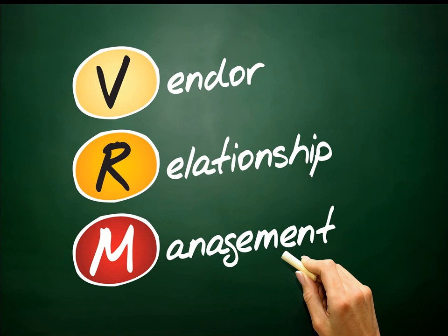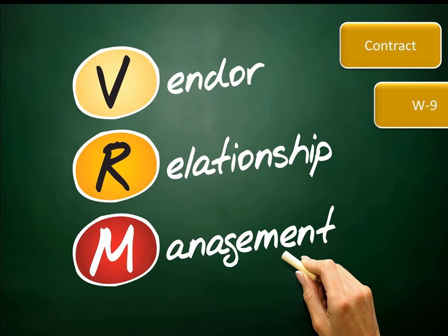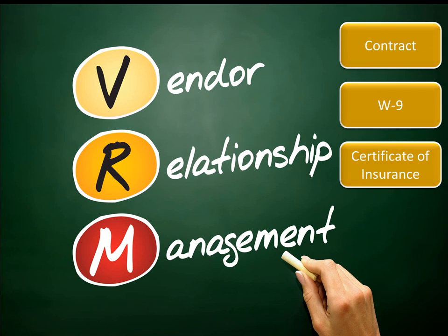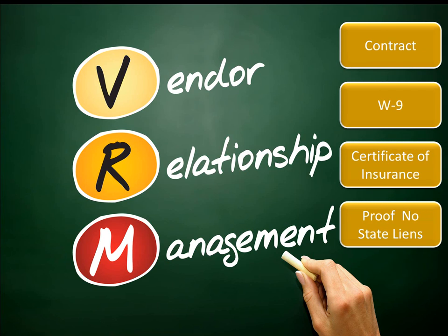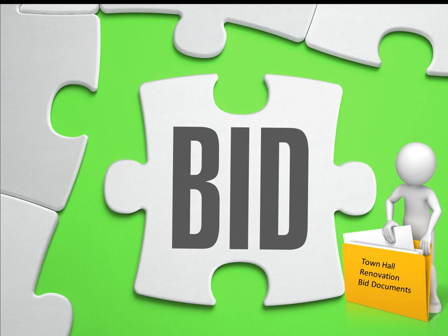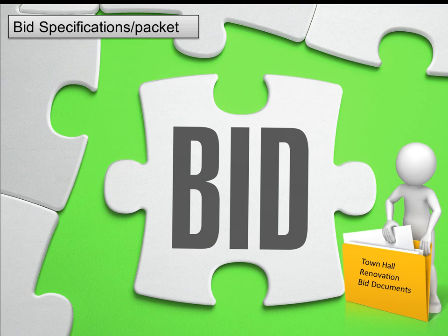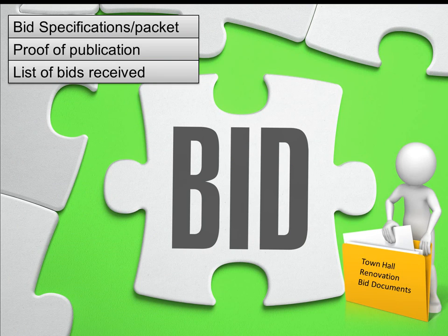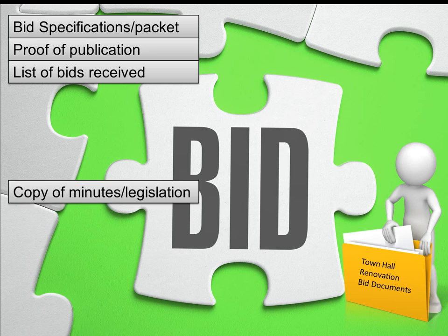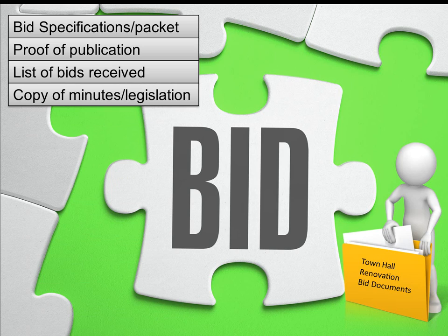Let's talk about how to manage contracts with vendors. At the very least, each vendor should have a file containing the contract or agreement, the completed W-9 form with their business name and tax ID, certificates of insurance, and confirmation that they have no state liens. Bid documents need to be kept together so they can be quickly audited — keep these documents separated from the rest of your project files for audit purposes. Make sure the file contains a copy of the bid specifications, the bid packet given to contractors, the proof of publication, the list of bids received and opened along with the bid amounts, and a copy of the minutes of the meeting where the contract was awarded and any legislation adopted for that purpose — at the very least, the date of the meeting and the legislation number so the auditor can quickly check these items.